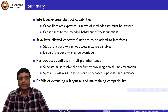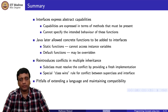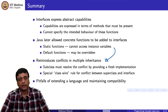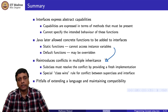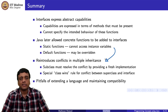Java has extended interfaces from being purely abstract to ones where you can have static functions without instance variables, and default functions which can be overwritten when you implement. Through this, Java has in some sense reintroduced conflicts into the problem it was trying to avoid by not allowing multiple inheritance of classes. There is a way of resolving this: if implementing two interfaces in conflict, you must override; if implementing an interface and extending a class, the class definition wins.